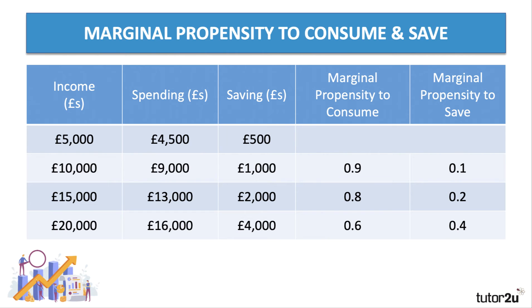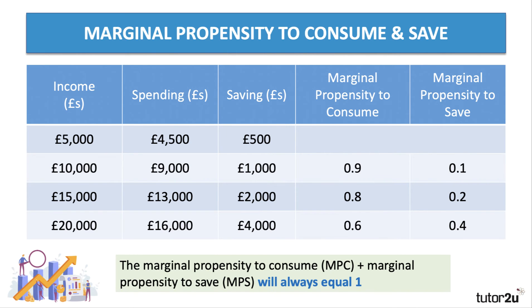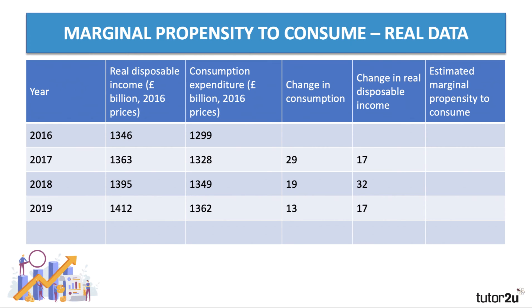You either spend or save a change in your disposable income — MPC plus MPS will always equal one. Here's data for the UK on real disposable income measured at 2016 prices, alongside consumer spending. The change in consumption is shown in column four and the change in disposable income in column five, so the estimated MPC can be calculated from this data.